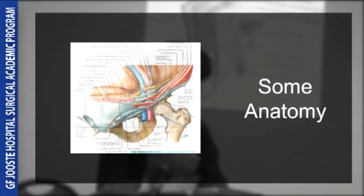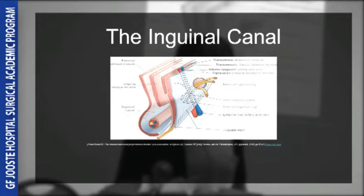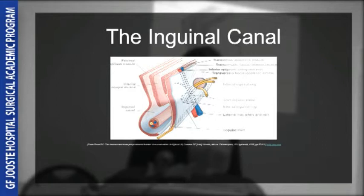The inguinal canal is about four centimetres long and located about two to four centimetres above the inguinal ligament, and carries the spermatic cord or the round ligament. Like any passage, it has two walls, a floor and a roof. It starts at the deep ring, which is a defect in the transversalis fascia and forms the posterior wall. It ends at the superficial ring, which is a triangular opening in the aponeurosis of the external oblique, forming the anterior wall.